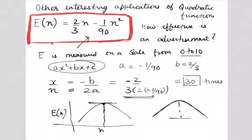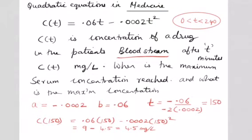Now there is one more application of how quadratic equations can be used in medicine. So this is a quadratic equation c(t). c(t) is the concentration of a certain drug which is 0.06t minus 0.0002t², where t is time and it is between 0 and 240. c is the concentration of the drug, that means how much of the drug is effectively used in our bloodstream, and t is in minutes. Concentration is measured in mg per liter.